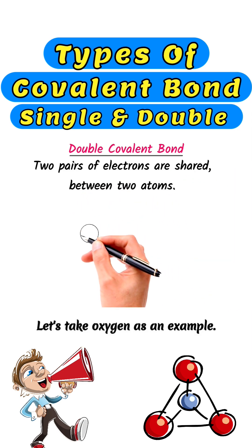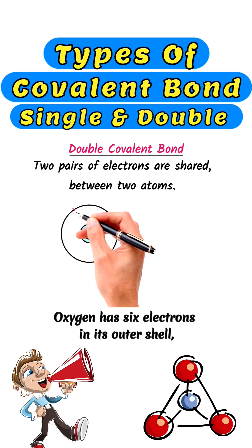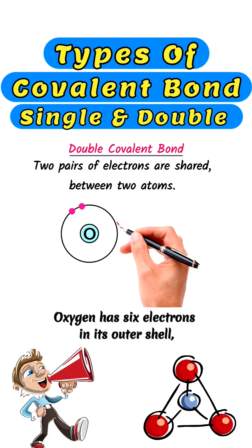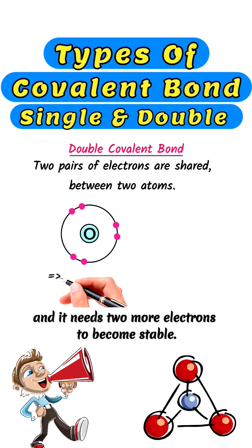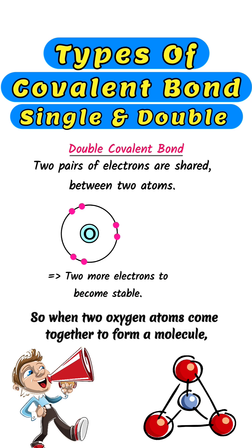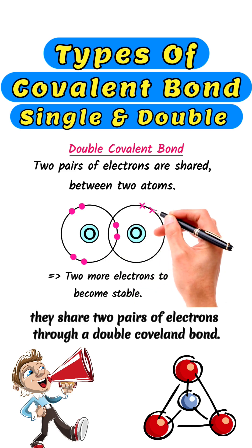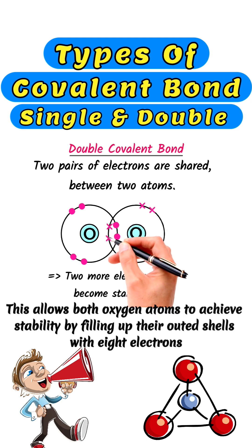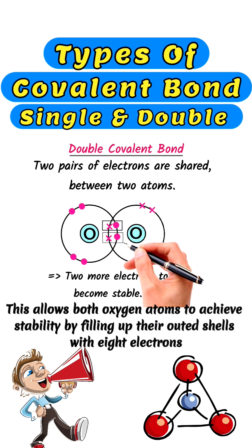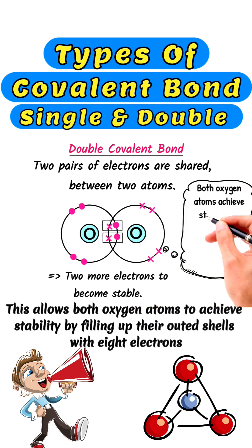Let's take oxygen as an example. Oxygen has six electrons in its outer shell and needs two more electrons to become stable. So when two oxygen atoms come together to form a molecule, they share two pairs of electrons through a double covalent bond. This allows both oxygen atoms to achieve stability by filling up their outer shells with each other.